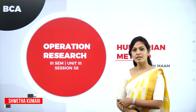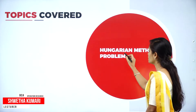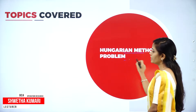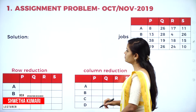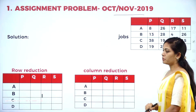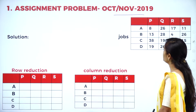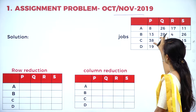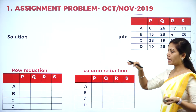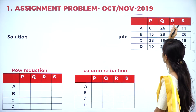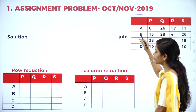Today I will explain some more important problems on the Hungarian method. The first problem is a previous year question paper problem. Here we have a number of jobs and machines: PQRS and ABCD.